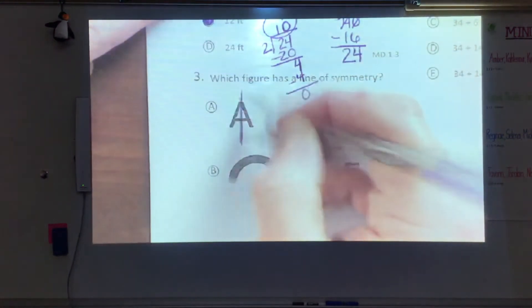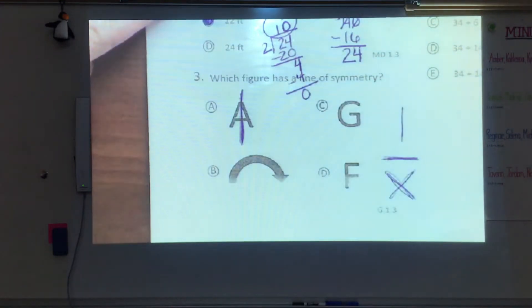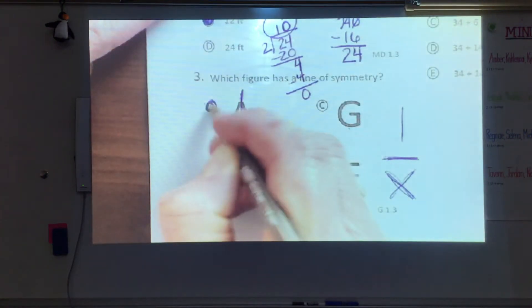We can split the letter A vertically. That's the only way. The G cannot be split anyway. This arrow can't be because it has the point on this side. If it was just the half circle we could split that vertically as well. And then the F we can't split it vertically, horizontally, or diagonally. So three should be letter A.